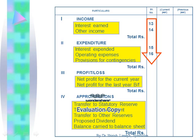In the schedule number column, schedule numbers are assigned: Interest Earned — Schedule 13, Other Income — Schedule 14, Interest Expended — Schedule 15, and Operating Expenses — Schedule 16. There is no separate schedule for Provisions for Contingencies; however, we have to write a working note for this.